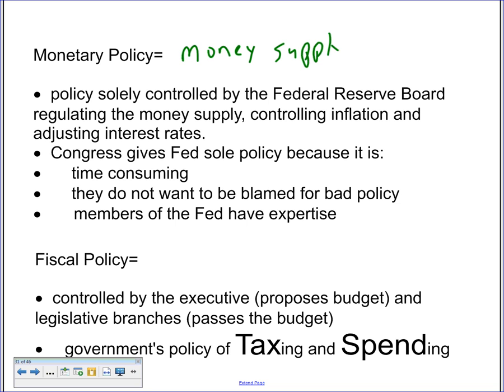Regulating the money supply — determining how much money is in circulation — is done exclusively by the Federal Reserve, or what we call the Fed. They're in the news this week because Larry Summers, who was in the running to be the new chair of the Fed, withdrew his name from consideration. The Fed regulates the money supply, controls inflation, and adjusts interest rates.